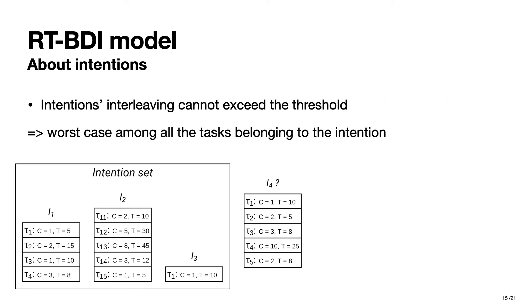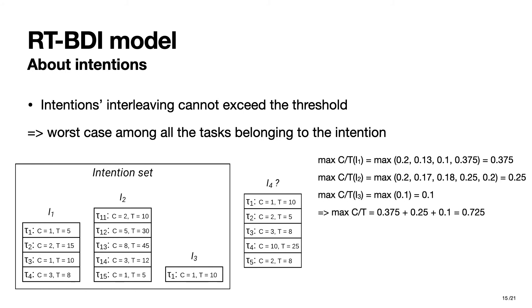To deal with this problem, we have decided to perform the schedulability test by considering the entire intention rather than each single task. In this case, the agent computes the maximum utilization factor among the tasks composing each intention. Then, it sums them in order to obtain the maximum fraction of processor utilization capacity that it could need during the execution of those intentions.